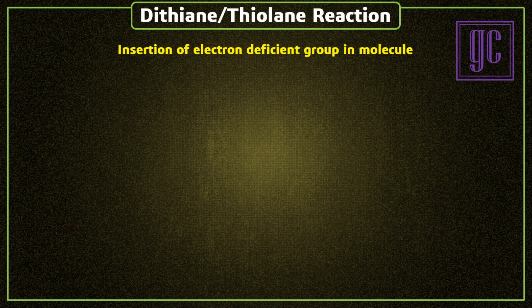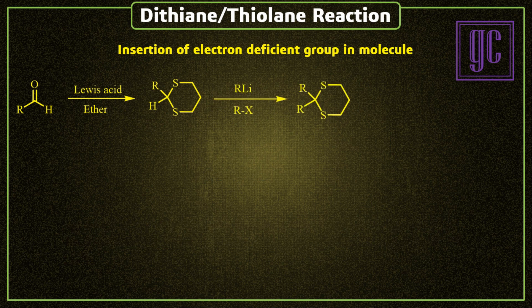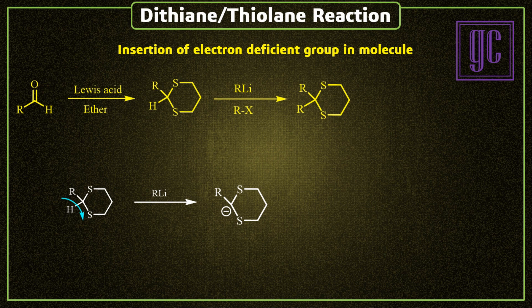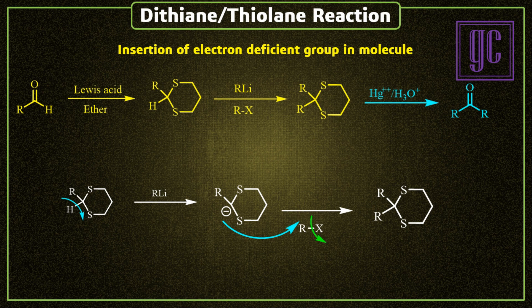Next is the application of the reaction. Protection changes the nature of the substrate. Via protection, molecules allow insertion of electron-deficient groups into the molecule. This is the mechanism of insertion: the acidic hydrogen is removed by a strong base, and as a result a carbanion is formed. It acts as a nucleophile and attacks on the electron-deficient group. Next, after hydrolysis, the carbonyl groups are obtained again. So overall, an electron-deficient group is inserted into a carbonyl group.